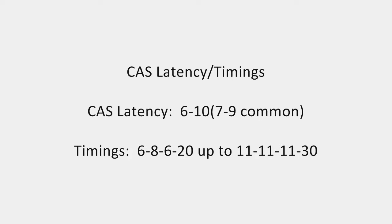When it comes to CAS latency and timings of memory modules, there are two things to look at. The CAS latency, which is the very first number, is the most important for memory performance, and runs anywhere from 6 to 10, while 7 to 9 is the most common. The timings are the first four numbers listed on the memory module. These run anywhere from 6-8-6-20 all the way up to 11-11-11-30, depending on the voltage and frequency the memory runs at. The lower the number, the tighter the timing; the higher the number, the looser the timing.